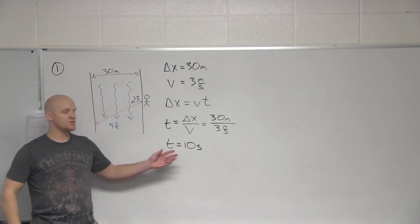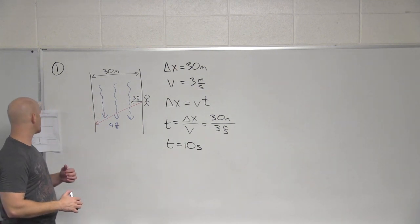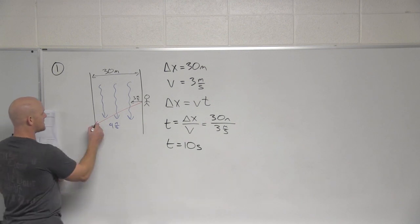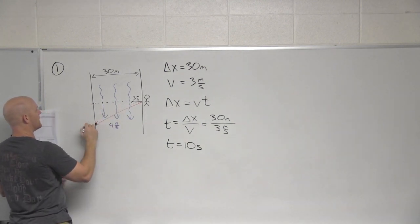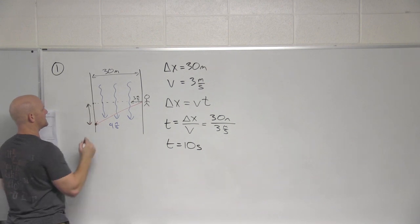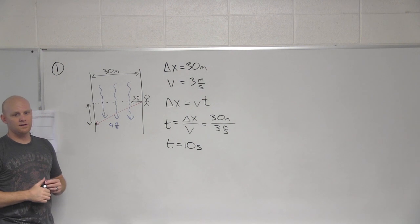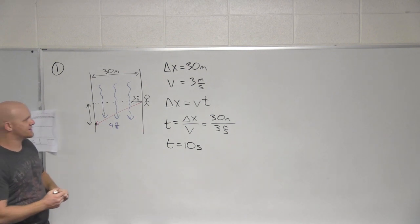So now that we know the time of the journey we can answer any other question thrown at us. In fact, what's the next question that is thrown at us here? How far downstream is he when he reaches the other side compared to where he started? So if he ends up right here and had he gone straight across he would have ended up here, I want to know how far downstream he is here. So what am I really asking you to solve for?